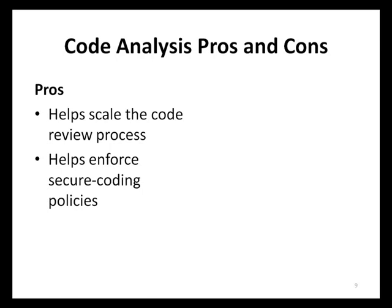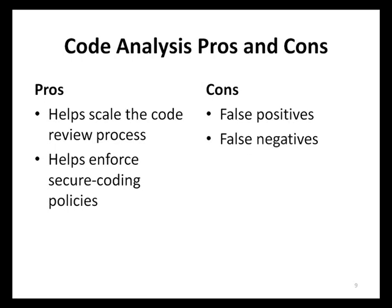Looking at the cons, the first major disadvantage of code analysis tools is that they can often produce false positives — detected code issues which are in fact not issues at all. Too many false positives will frustrate developers as they will be spending large amounts of time chasing non-issues, and with enough false positives, developers may eventually stop using the tool altogether. The opposite of false positives is false negatives — actual issues in code that the code analysis tool has failed to detect. False negatives leave development teams with a false impression that their application is secure when in fact it may not be.